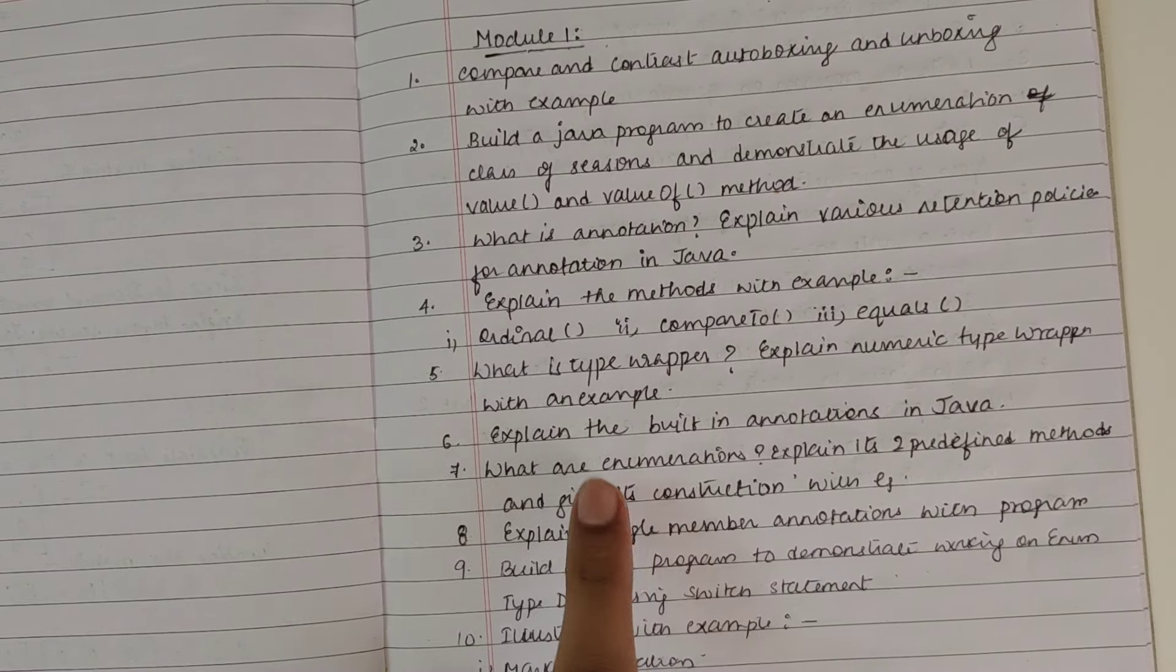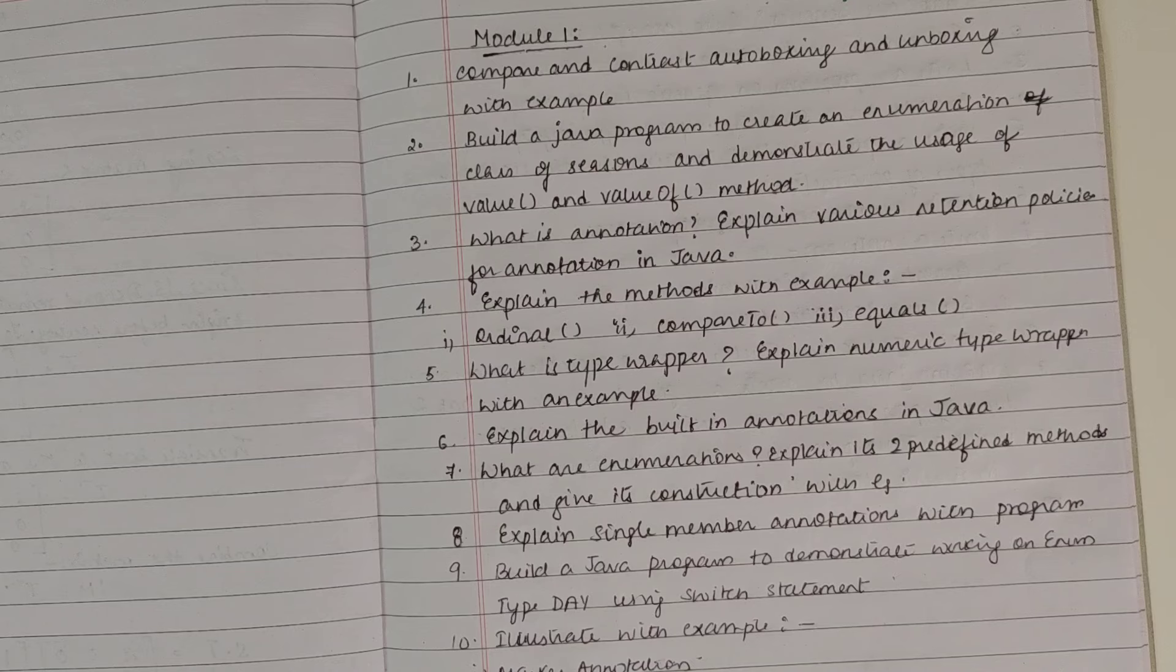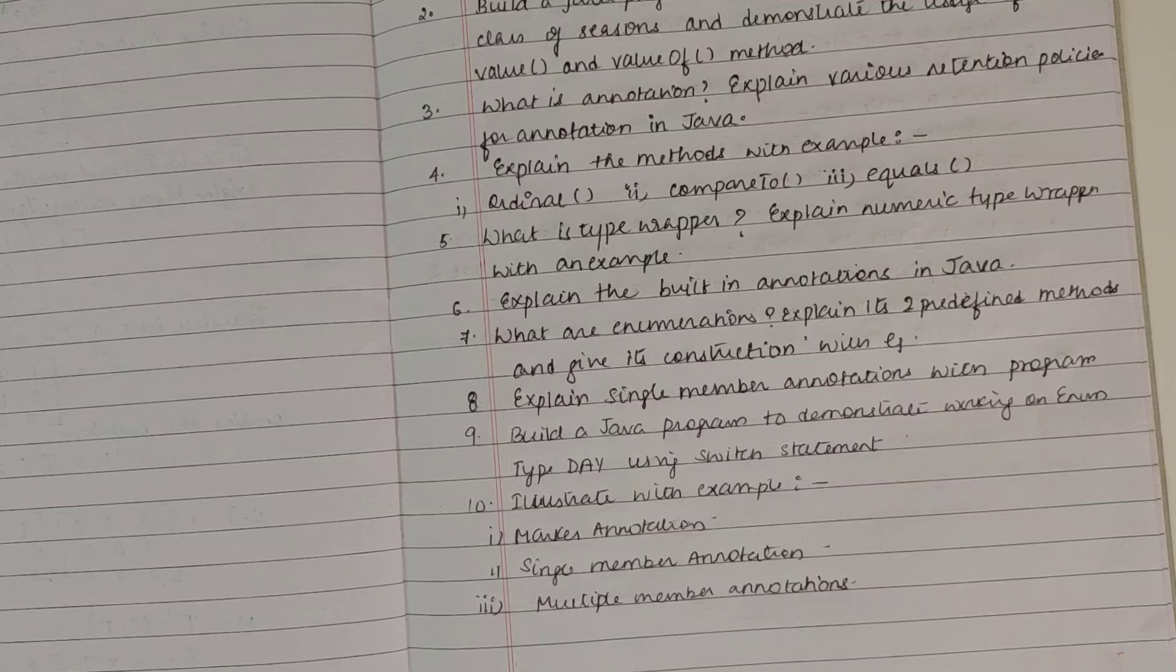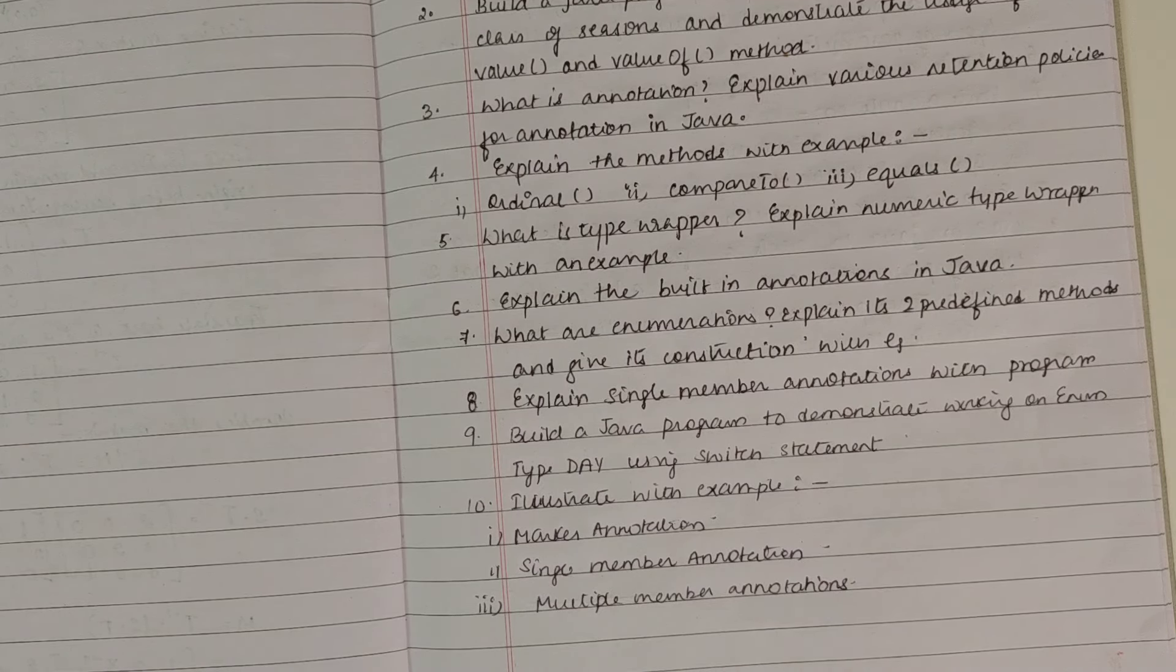What are the built-in annotations in Java? What are enumerations and explain the two predefined methods. Explain single member annotations with program. Build a Java program to demonstrate working on enum type day using switch statement. Illustrate with examples: marker annotation, single member annotation, as well as multiple member annotations.